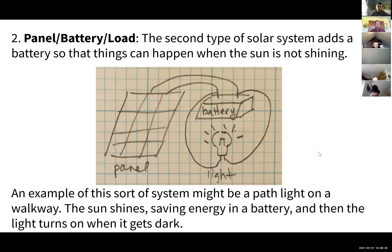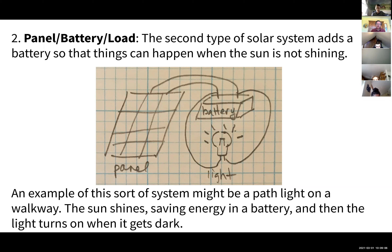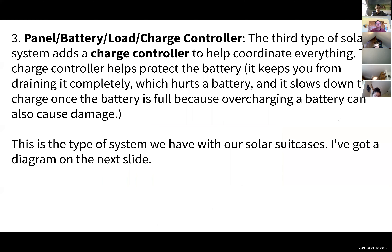The second type of system has a panel, a battery, and a load. The battery allows things to happen when the sun is not shining. A familiar example is solar path lights — those lights on a walkway with a small solar panel and battery. The basic circuit: when the sun is shining, the light is off; when the sun is not shining, the light turns on. That's a very common type of system.